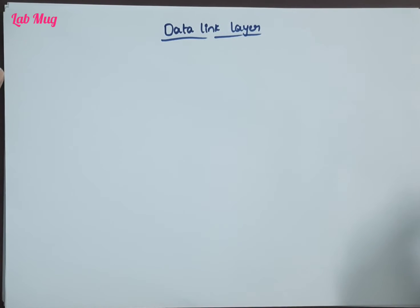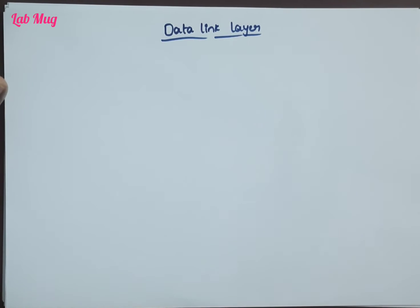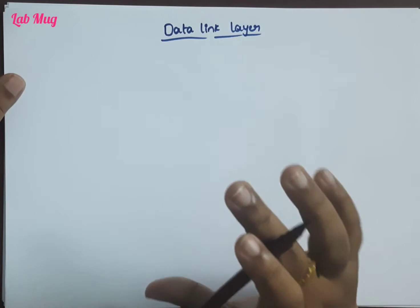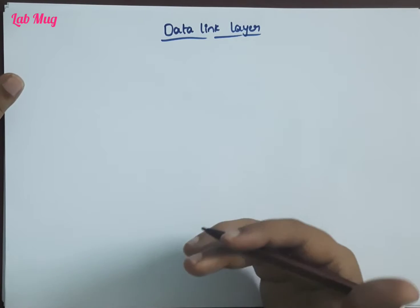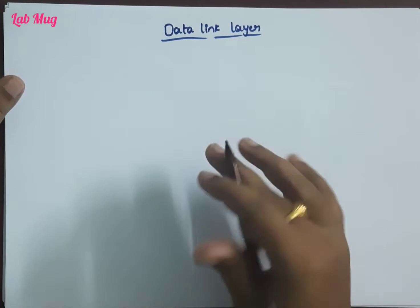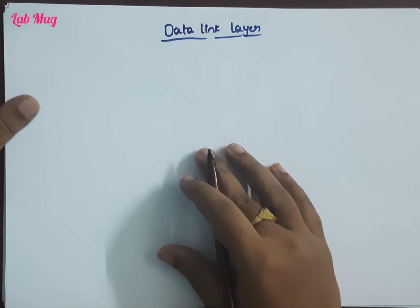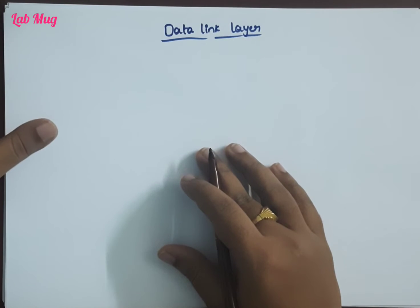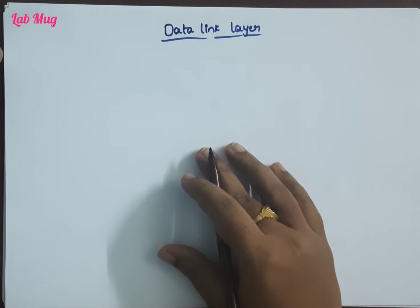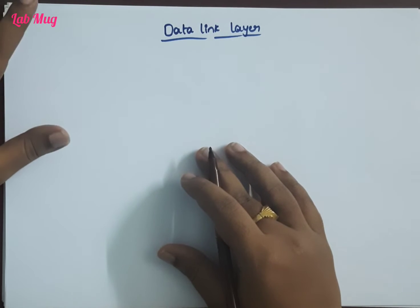Hi everyone. In the previous class on computer networking topics, we covered OSI layers. The first layer is the physical layer, the second layer is the data link layer. So from the physical layer, we progress to the data link layer. This data link layer works in the OSI model from bottom to top; the second layer is the data link layer.